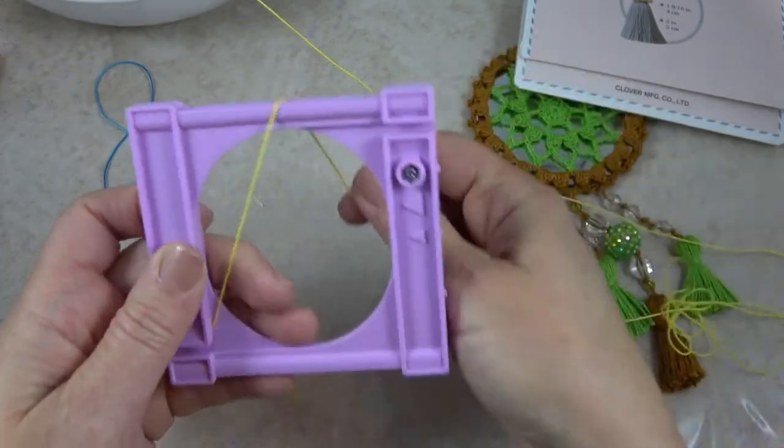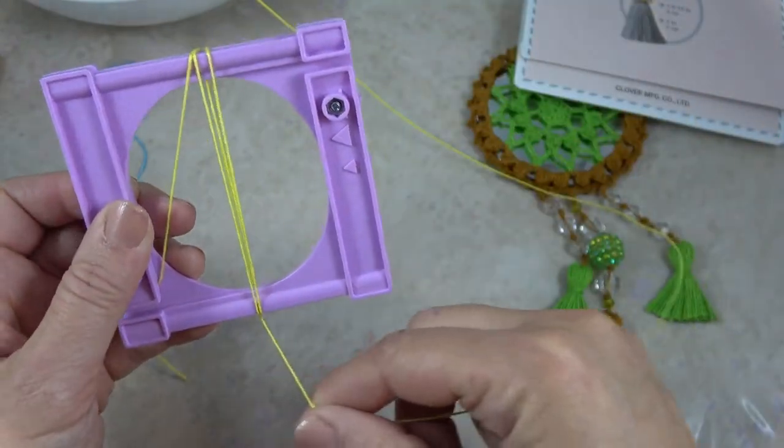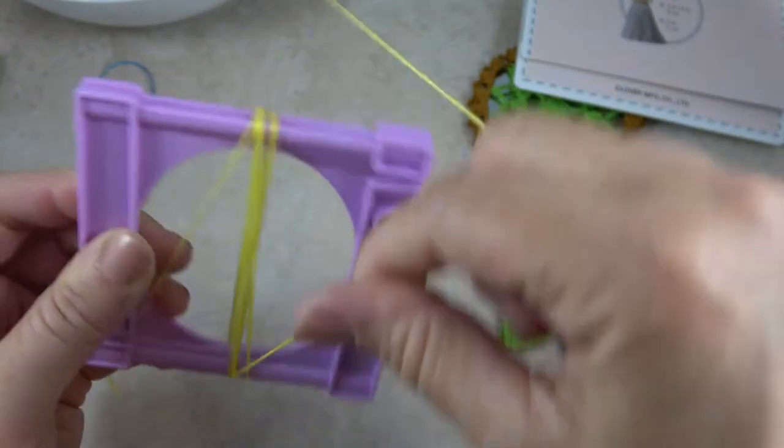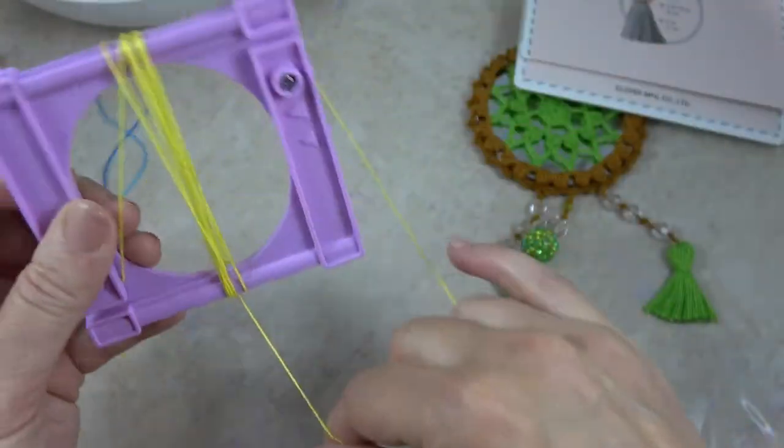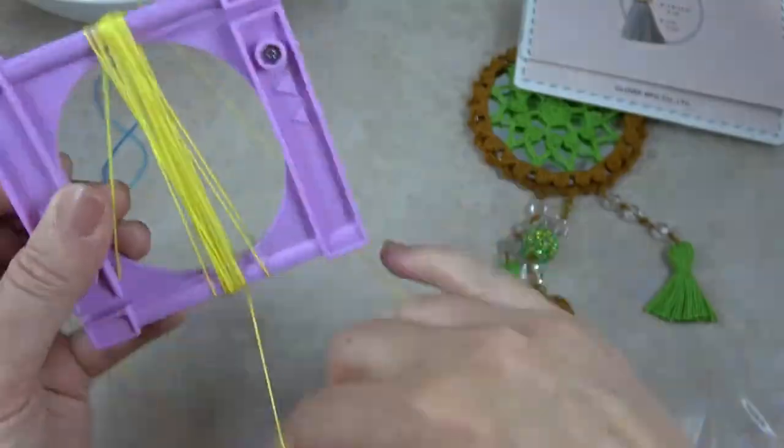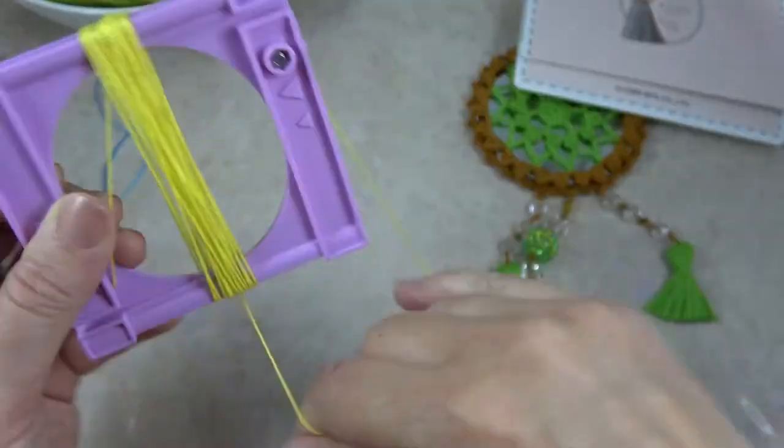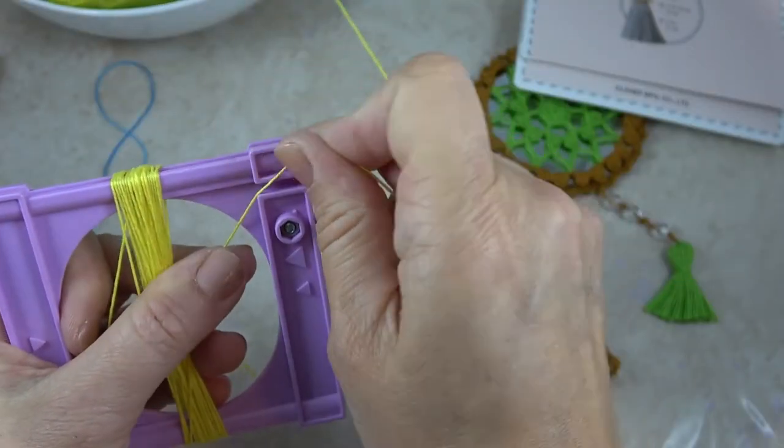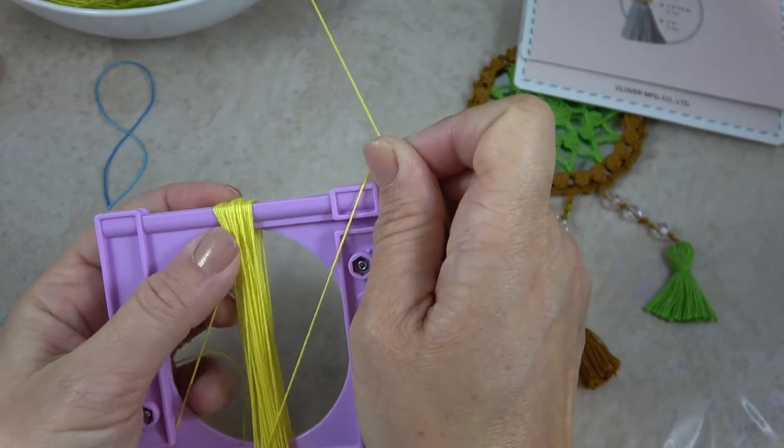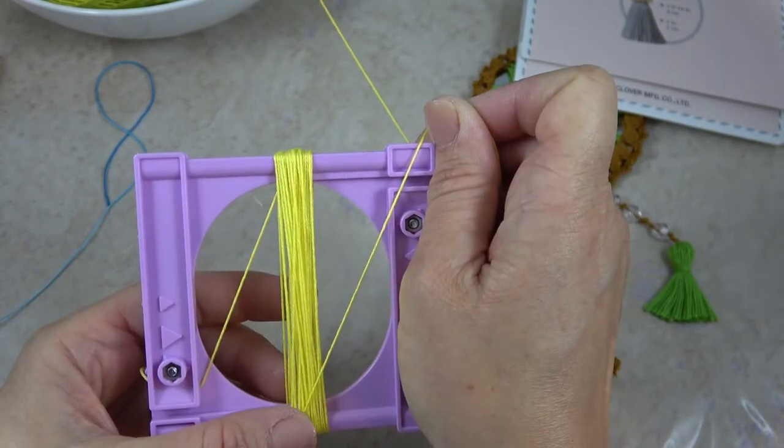Now for my tassels I wrapped about 21 to 22 times. The directions recommend that you wrap about 25. It really depends on how full you would like your tassel. If you want it really fat and chunky I would wrap it more than 25 times.